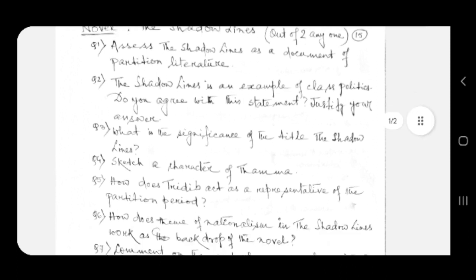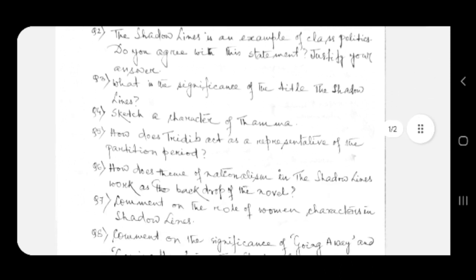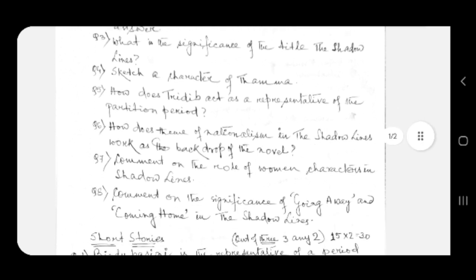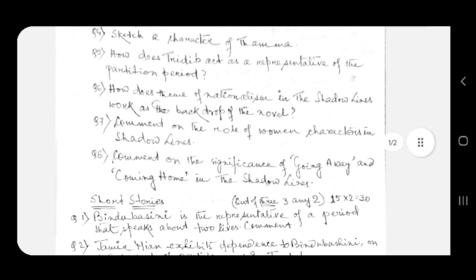Question number four: sketch a character of Thamma. Question number five: how does Tridib act as a representative of the partition period? Question number six: how does the theme of nationalism in The Shadow Lines work as the backdrop of the novel?